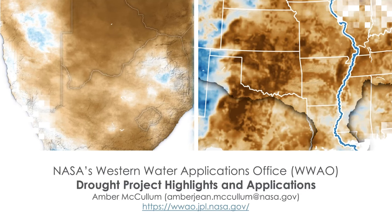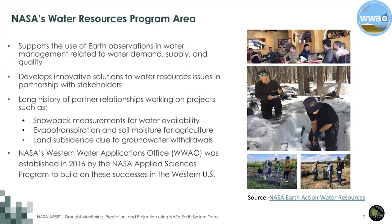Thank you Amita and thank you all at RCET for having me today. As a previous RCET instructor it's really great to be back. My name is Amber McCollum and I will be providing you with an overview of NASA's Western Water Applications Office, or as we like to call it WAIO. I will be speaking about a few of our drought projects and highlights and then providing a demonstration of one of our tools. WAIO is part of NASA's water resources program area which supports the use of earth observations in water resource management related to water demand, supply, and quality via innovative solutions with partners and stakeholders.